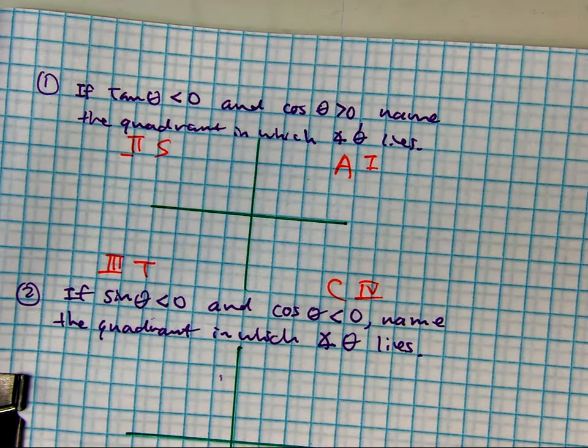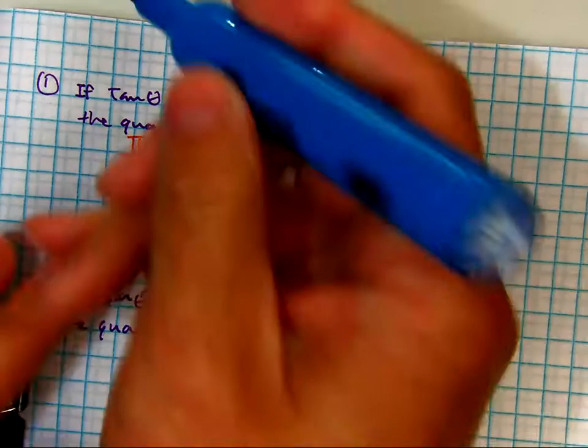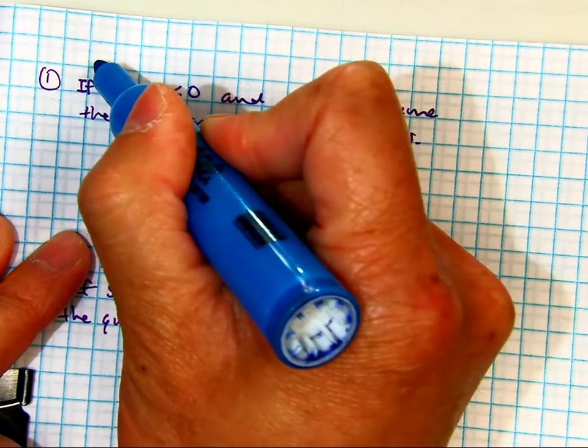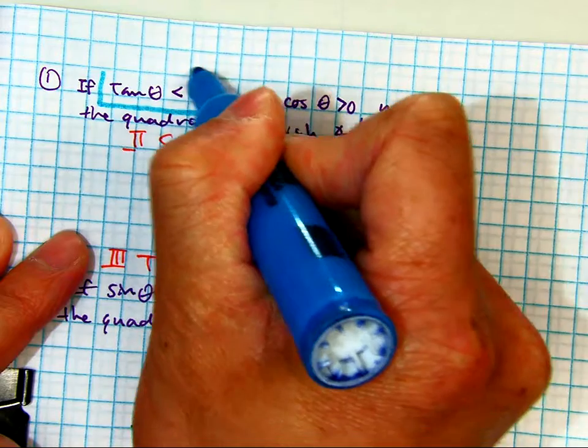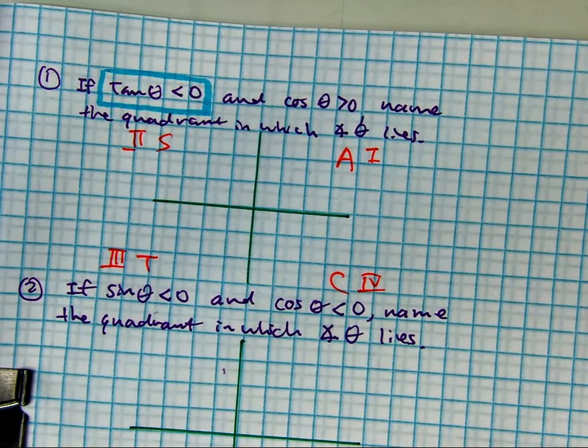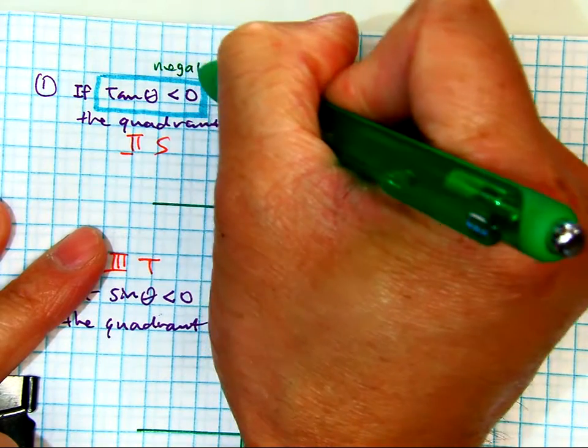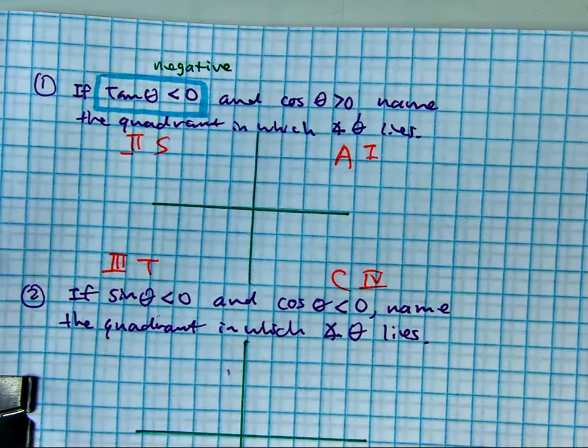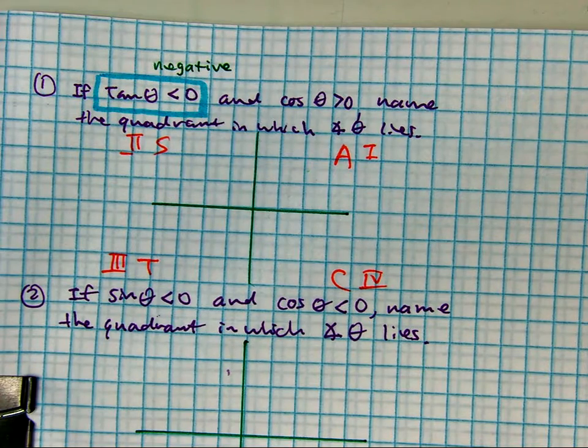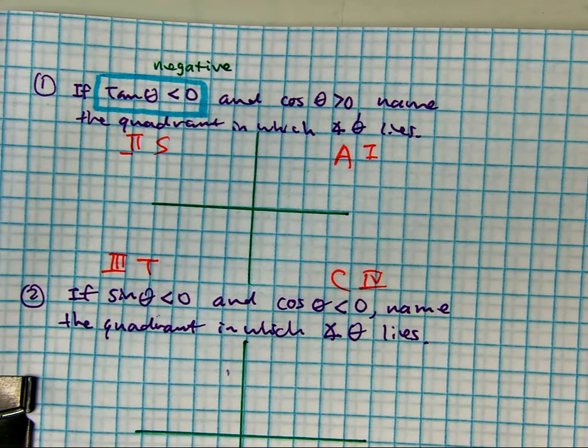Tatiana, when it says tangent of theta is less than zero, what does that mean, less than zero? Negative. Tatiana, where is tangent positive?